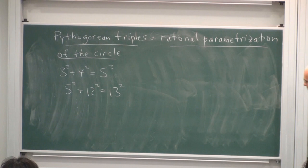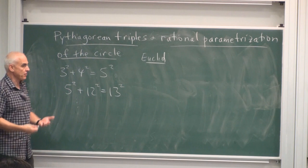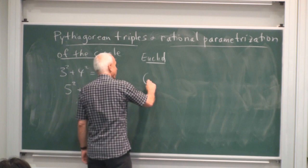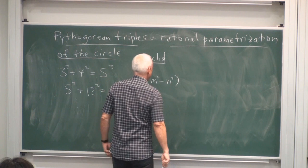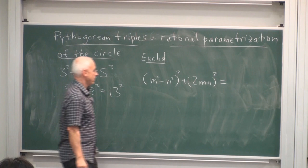And in Euclid, later on we find a description of how to systematically generate these things. And it turns out that it's closely related to a relatively simple little formula. So that is (m²-n²)² + (2mn)² = (m²+n²)².